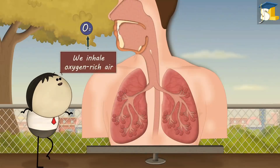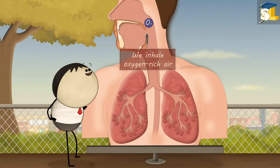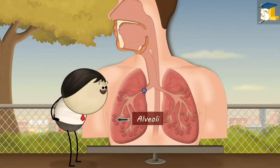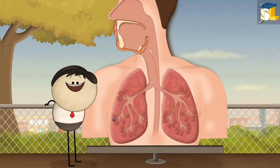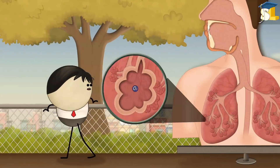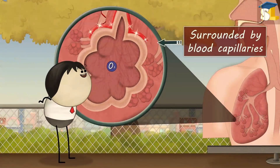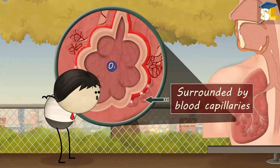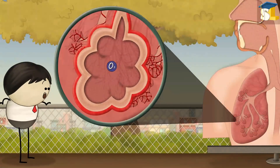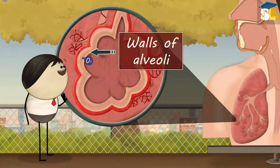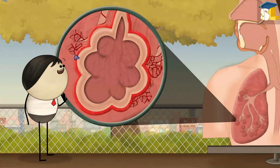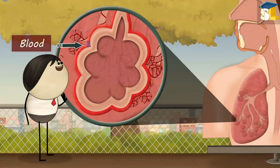Normally, we inhale oxygen-rich air which reaches our alveoli. Alveoli are surrounded by blood capillaries. Here, the oxygen through the walls of alveoli diffuses into our blood.